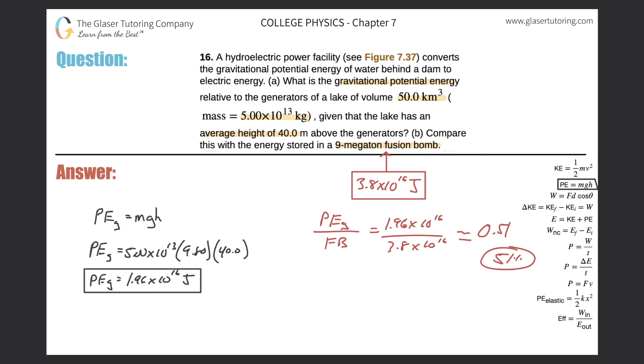So in other words, it doesn't matter if you have a percent or a fraction, depends on how you want to state your answer. But basically, that energy that's stored in the lake is about half that of a 9 megaton fusion bomb.